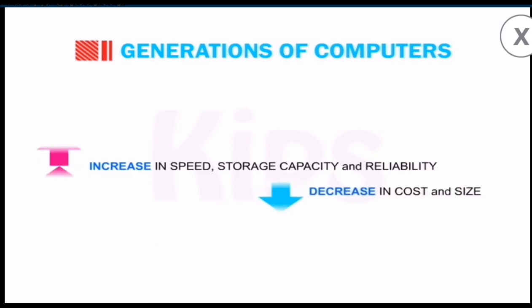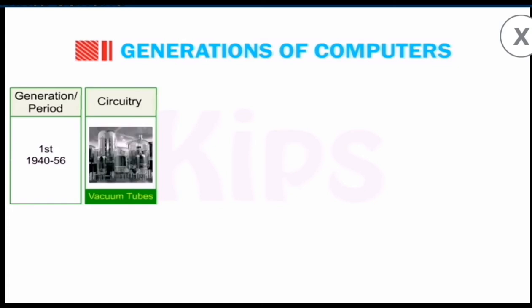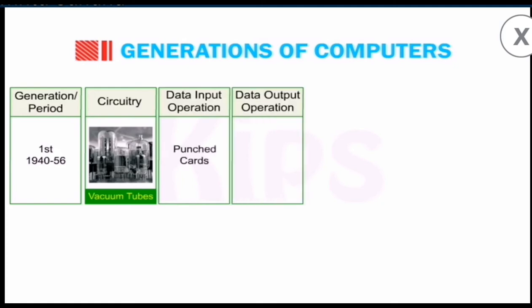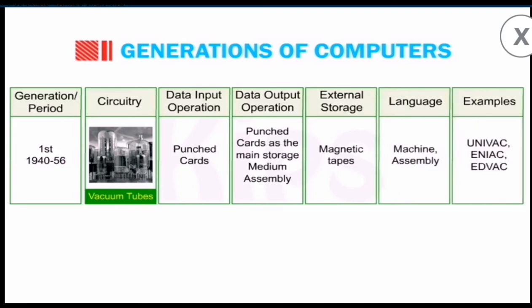Let's start with the first generation of computers. The first generation started from 1940 to 1956, in which they used vacuum tubes as circuitry boards. Data was input by punch cards, output was reflected on punch cards only. External storage used magnetic tapes. They used machine language, and examples are UNIVAC, EDVAC, and ENIAC.